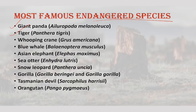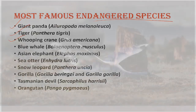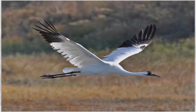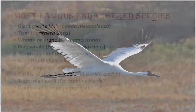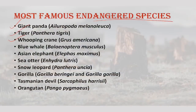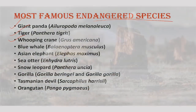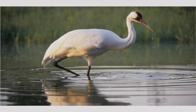Next is the whooping crane. In 1938, when the first population survey was conducted, only 29 whooping cranes remained in the wild. Three years later, only 16 were left. Hunting and reduction of their wetland habitat had devastated the population, and concentrated efforts to salvage remnant birds did not begin until the late 1960s.